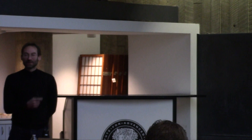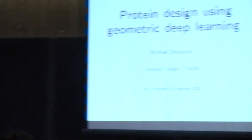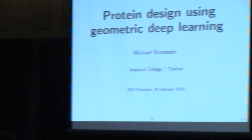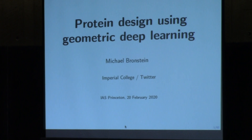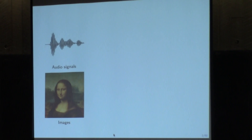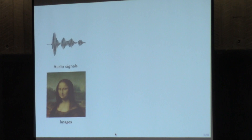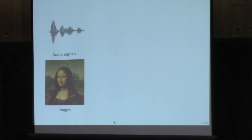Inspired by a talk two days ago, I tried to automatically generate an abstract for this talk using a website called Talk to a Transformer. Why do we need geometric deep learning? Most of the data the machine learning community has considered so far assumes an underlying Euclidean structure — whether images as functions on grids, one-dimensional acoustic signals, or text sequences.